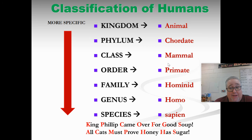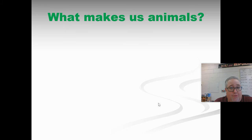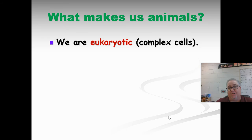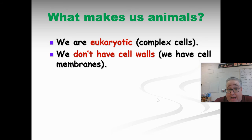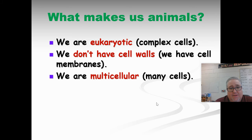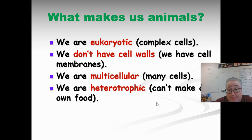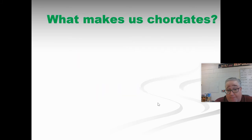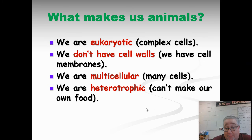You need to know these — the first test is coming up soon. Let's go through them individually. What makes us an animal: we're eukaryotic, we don't have cell walls, we have cell membranes, we're multicellular — there are no unicellular animals — and we're heterotrophic. That's pretty much what makes us an animal.